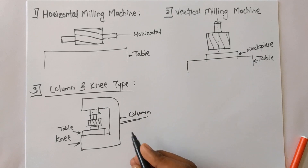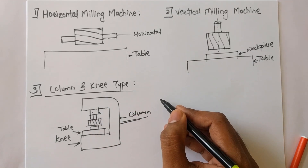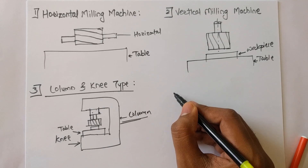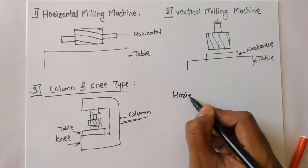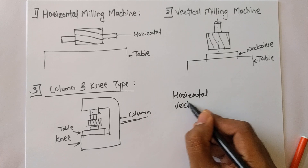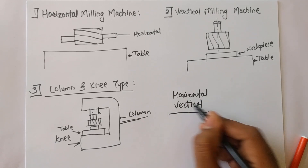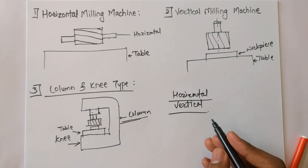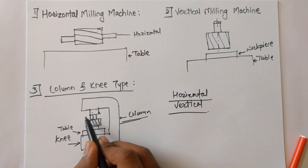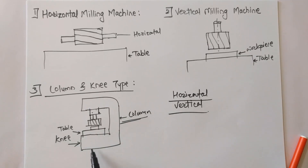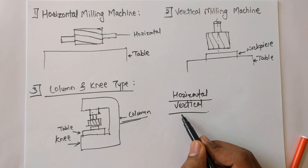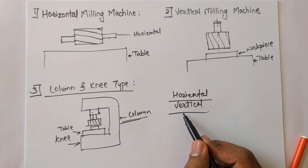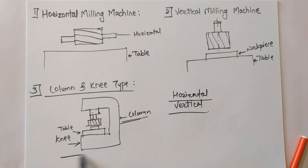According to the axis of the cutters, there are two types: horizontal and vertical. So when you encounter the name 'horizontal column and knee type milling machine,' it refers to a horizontal axis column and knee type. And 'vertical column and knee type milling machine' refers to a vertical axis column and knee type.